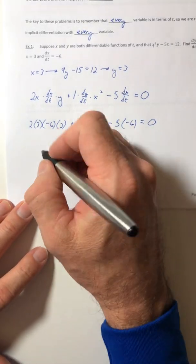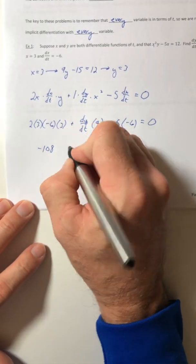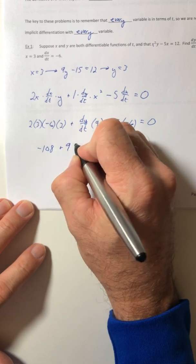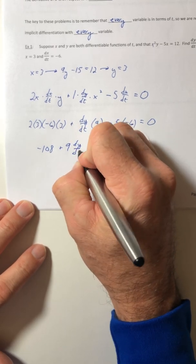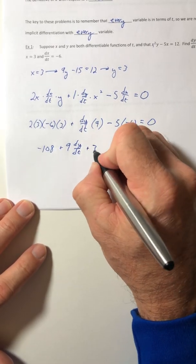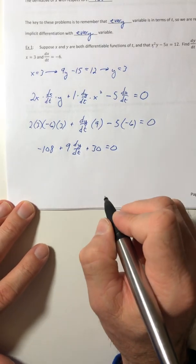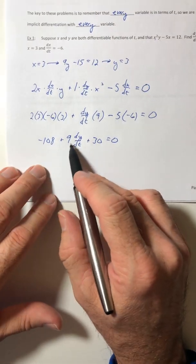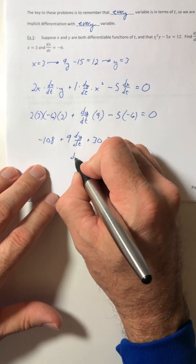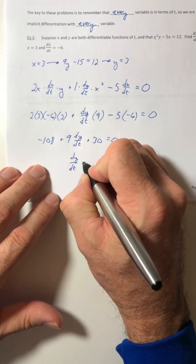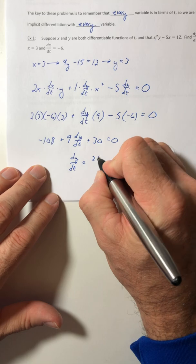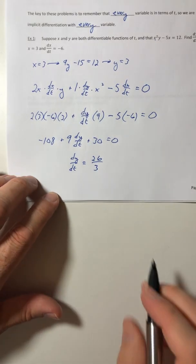So now you have a whole bunch of numbers and the dy/dt, now you can pretty much solve for it. So if you multiply all that out: -108 + 9dy/dt + 30 = 0. So if you solve for dy/dt, you're going to end up with 26/3.